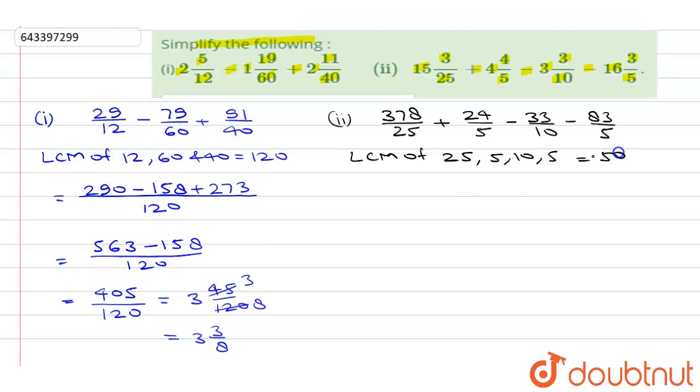Now we'll find the LCM of all the denominators. So LCM of 25, 5, 10, and 5 is equal to 50. Now we'll divide this LCM.